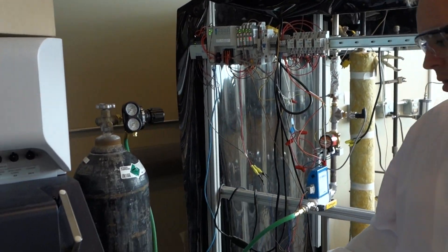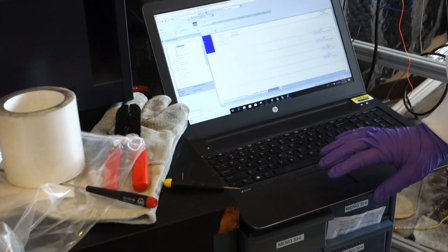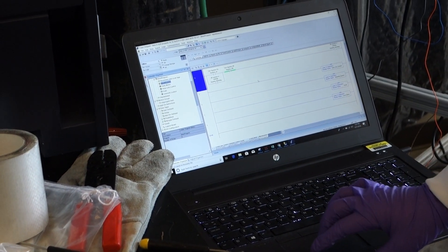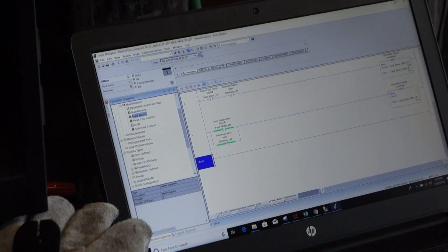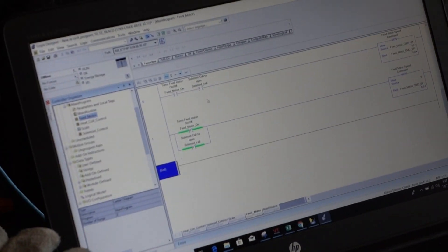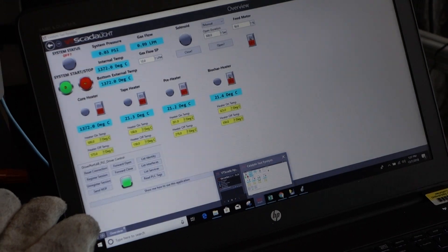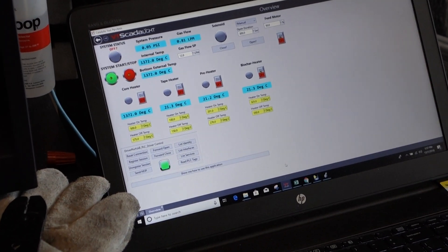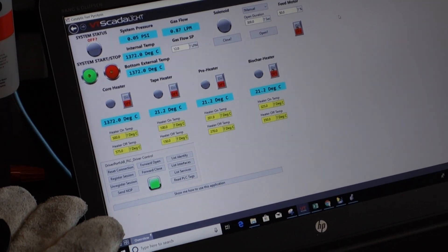Now, in order to control all of these, we are using the Studio 5000 software in which we use a ladder diagram to control all of our different components in our system. And with this, we developed a human-machine interface that creates ease of use. In one place, we can control all of the aspects of our system.